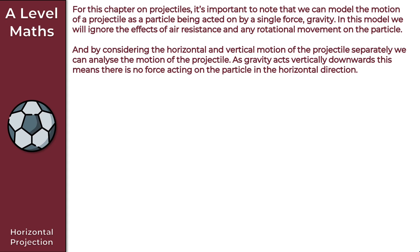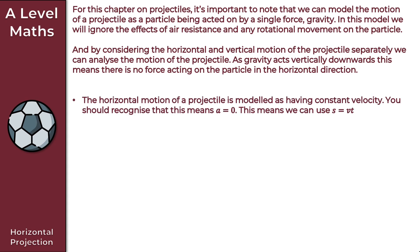As gravity acts vertically downwards, there is no force acting on the particle in the horizontal direction. To summarize, the horizontal motion of a projectile is modeled as having constant velocity. This means the acceleration is equal to zero, so we can use s = vt. Recapping the SUVAT equations, s = vt applies when a equals zero.